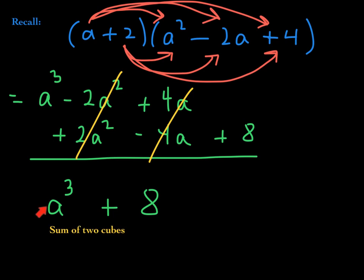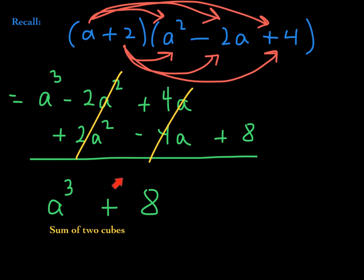a cubed is a perfect cube because it's a times a times a. 8 is a perfect cube because it's 2 times 2 times 2. So how does a sum of two cubes factor? It factors as a binomial followed by a trinomial. Notice: the plus sign in the sum is the same sign in the first factor — in the binomial, it has the same sign. The first sign in the trinomial factor is the opposite sign. And then the last term is always positive. Keep that pattern in mind.